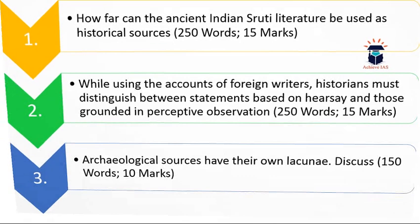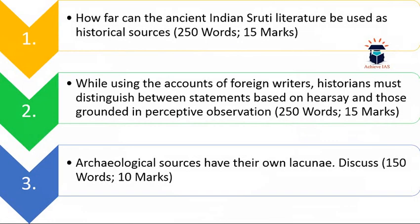The first question is: How far can the ancient Indian Shruti literature be used as historical sources? The word limit is 250 and the maximum marks are 15. The second question is: While using the accounts of foreign writers, historians must distinguish between statements based on hearsay and those grounded in perceptive observation. The word limit is 250 and marks are 15.